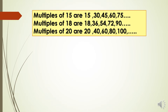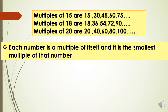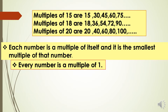From all these examples we get the properties of multiples, which you already learned in Class 4. Let us revise them. The first property is: each number is a multiple of itself and it is the smallest multiple of that number. You can see that in multiples of 15, the number 15 is there and it is the smallest multiple.